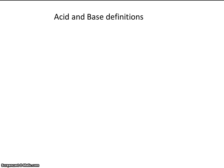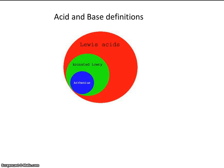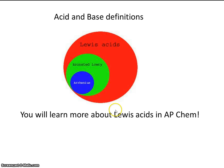In the following two videos, we're going to be defining acids and bases. There are several definitions: the Arrhenius model, the Bronsted and Lowry model, and also the Lewis model of acids and bases. The Lewis model you'll probably learn about in AP Chem, so here we're just going to focus on the Arrhenius model and the Bronsted and Lowry model.